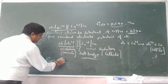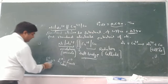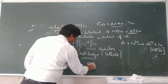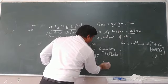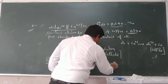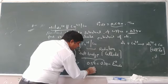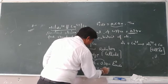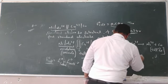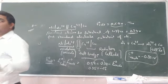Using the formula E°cell = E°cathode − E°anode: 0.59 = 0.34 − E°anode. Solving: E°anode = 0.34 − 0.59 = −0.25 V. So the standard electrode potential for the nickel half cell is −0.25 V.